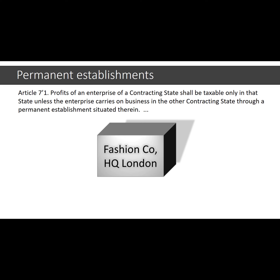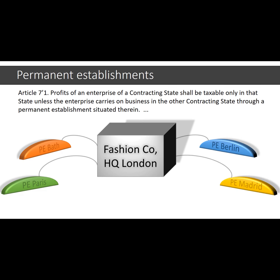Let us assume that Fashion Co. is established in London. It is successful and after two years it opens a branch in Bath. From a UK perspective, Fashion Co. is taxed exactly as it was before, when it had no branch or PE. Due to ongoing success, Fashion Co. opens branches in Berlin, Paris and Madrid. According to Article 7 of the treaties between the UK and France, Germany and Spain, these countries can now tax the net profits of these branches in France, Germany and Spain respectively, as if each of these PEs were separate and independent enterprises.